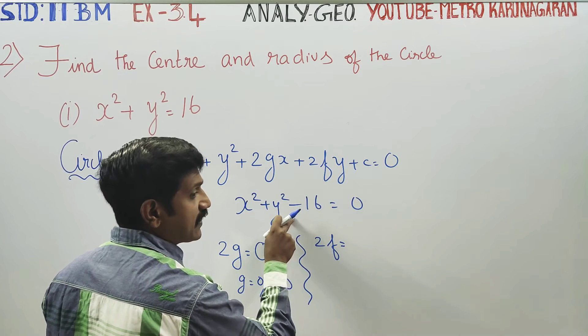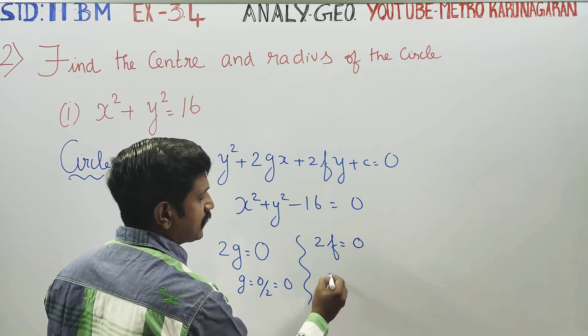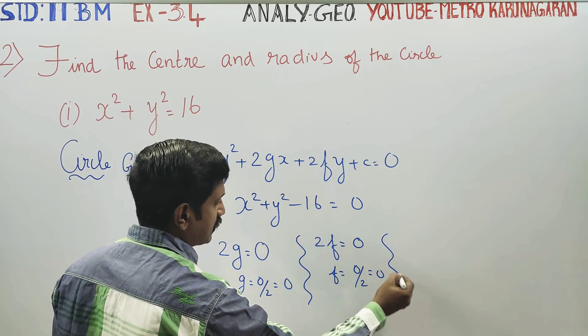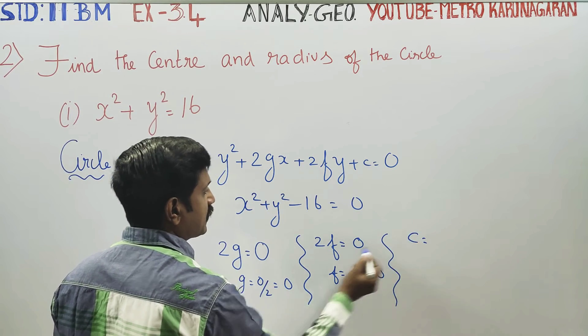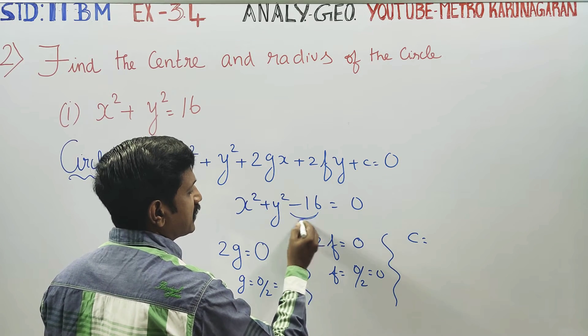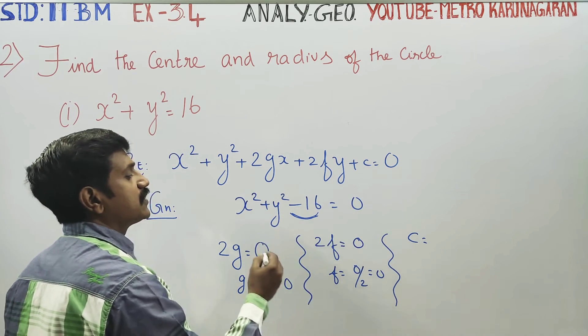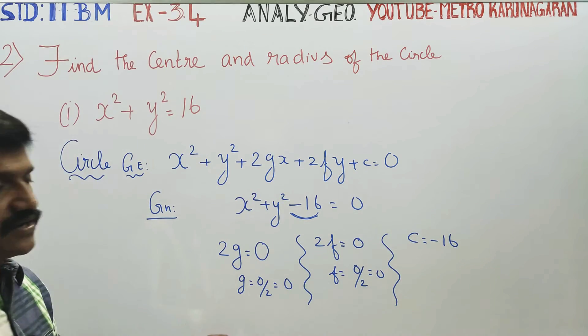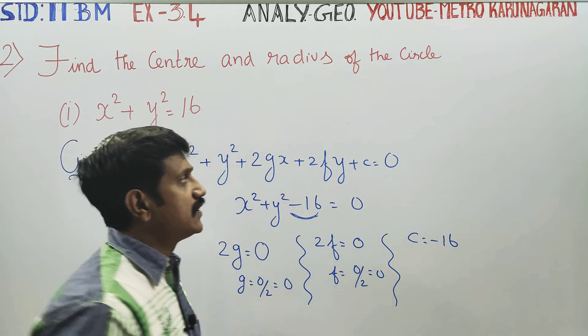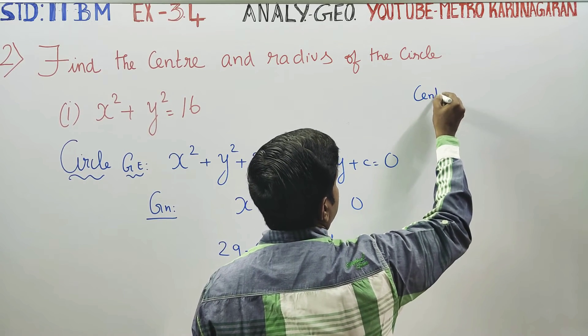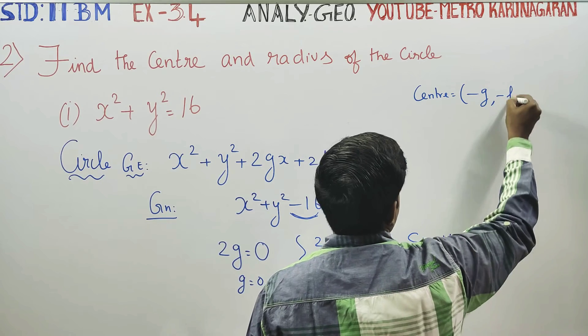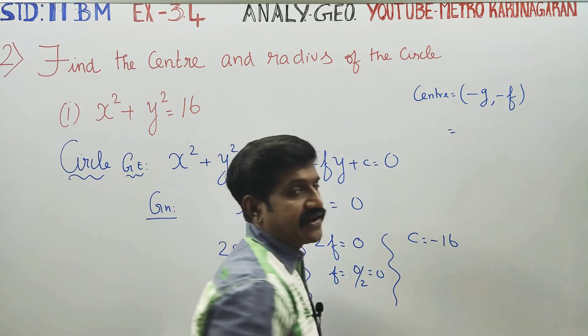f is equal to 0 by 2. Answer is 0. Last constant c. c is equal to c, minus 16. This is equal to c minus 16.